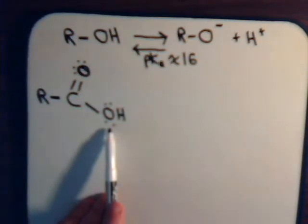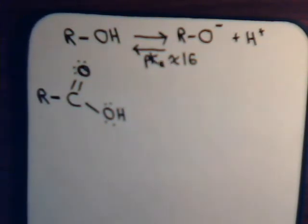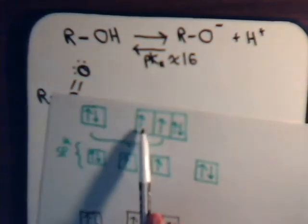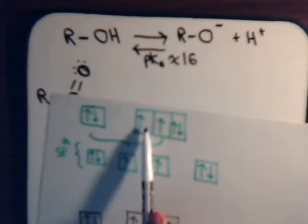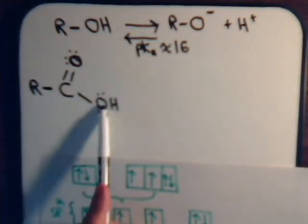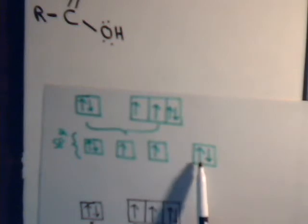For the hydroxyl oxygen atom, here we have the orbital diagram. The 2s orbital merges with two p orbitals to hybridize and form three sp2 molecular orbitals, and this p orbital remains unhybridized. So it can form two sigma bonds — one with carbon, one with hydrogen — and there are two lone pairs of electrons left over: pi electrons and sp2 electrons.